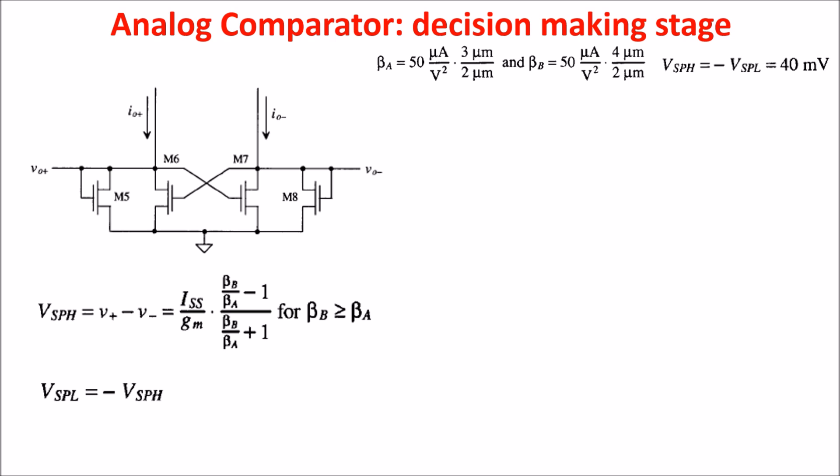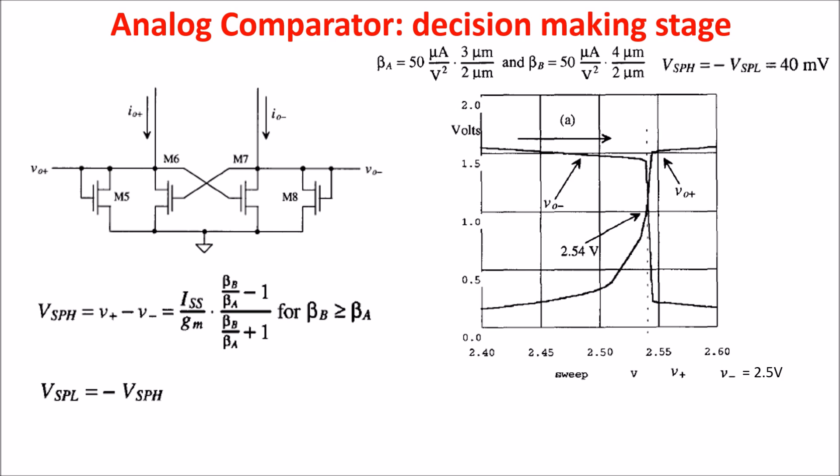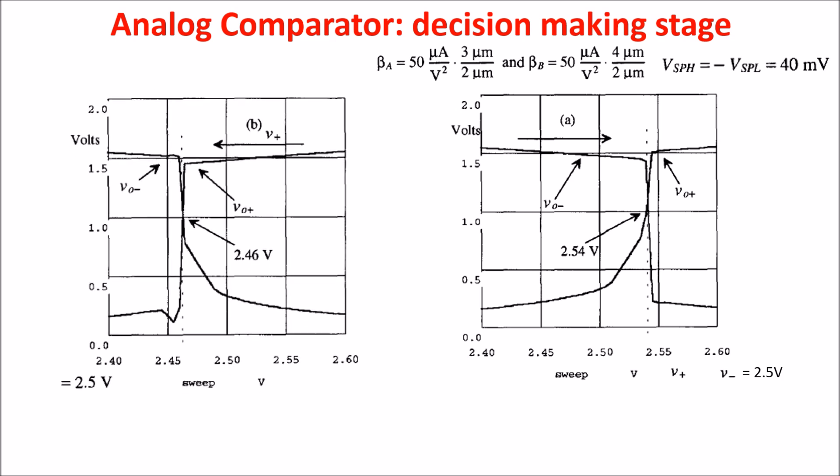Here you see what happens if we hold V minus to 2.5 volts, and we sweep V plus from 2.4 to 2.6 volts. As you can see, VO minus is equal to VO plus when V plus is 40 millivolts above V minus, so when V plus is 2.54 volts. A similar behavior can be shown for VSPL, which is at 2.46 volts.